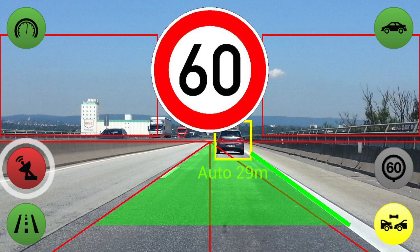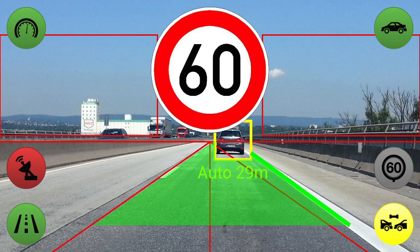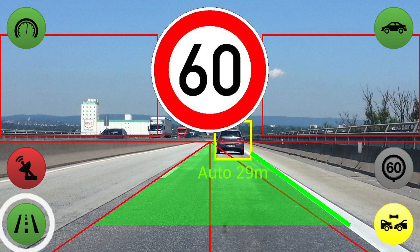A red color indicates that there is a problem with the subsystem. This can happen if the server connection is currently unavailable, or if the lane tracking system currently cannot properly recognize the road. A green color indicates that the system is online and working properly.